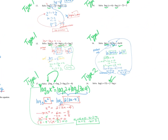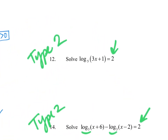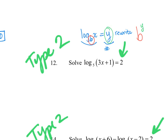All those were Type 1 — logs on everything. Now for Type 2, we use exponential form. The reminder: if log base b of x equals y, you rewrite it as b to the y equals x, because the log always equals the power and the argument is what equals b to that exponent.